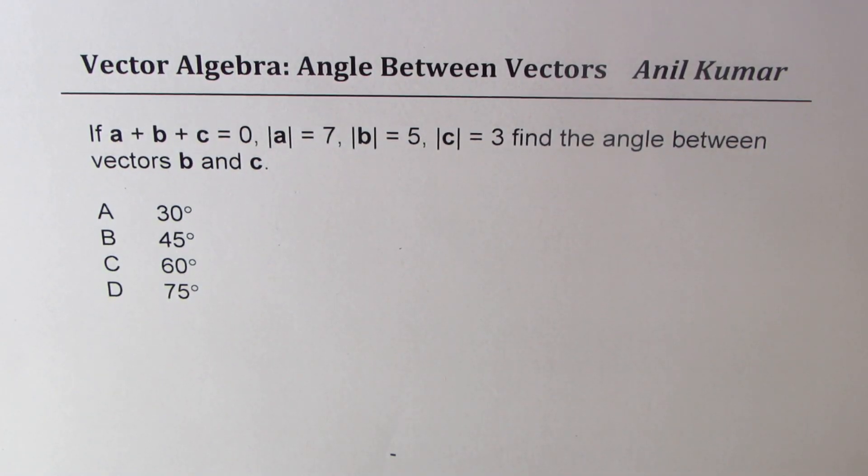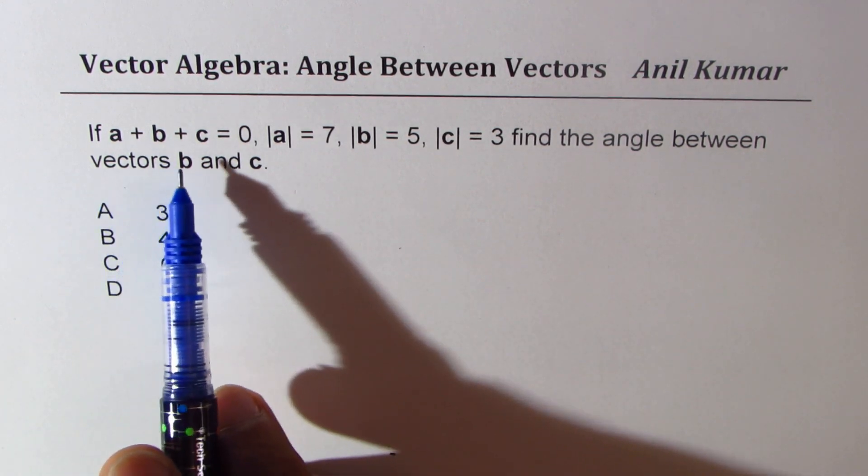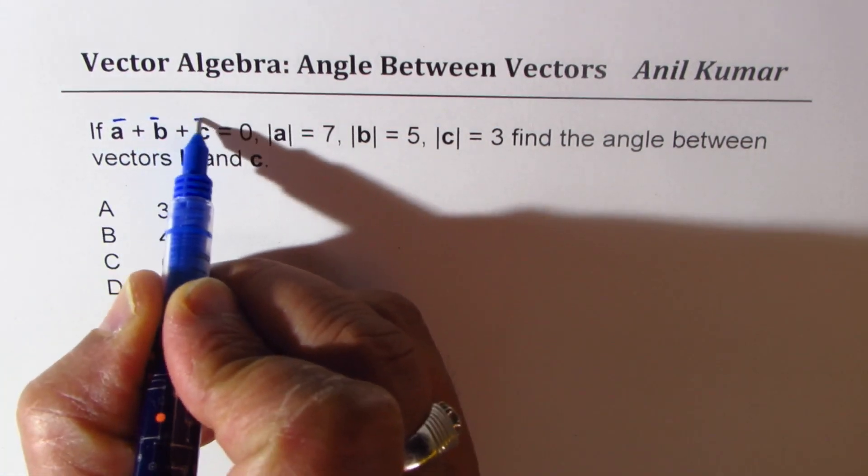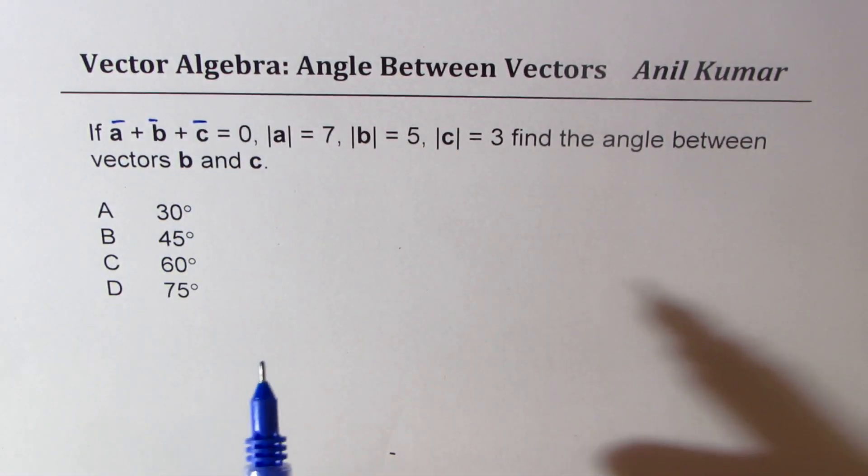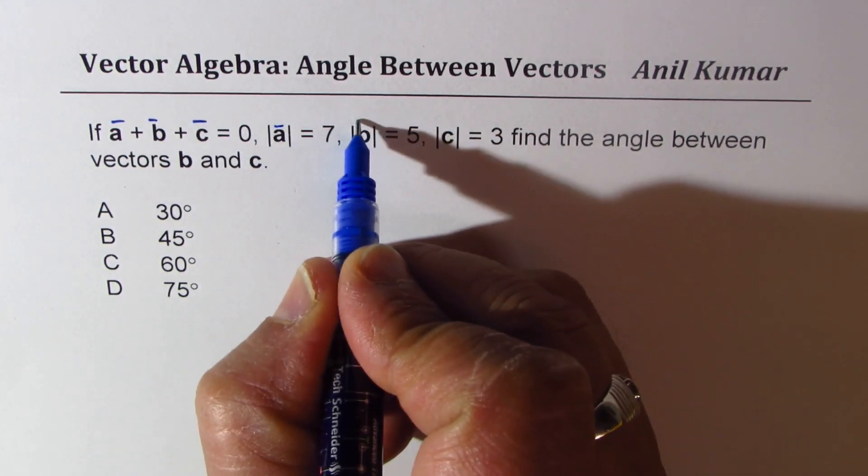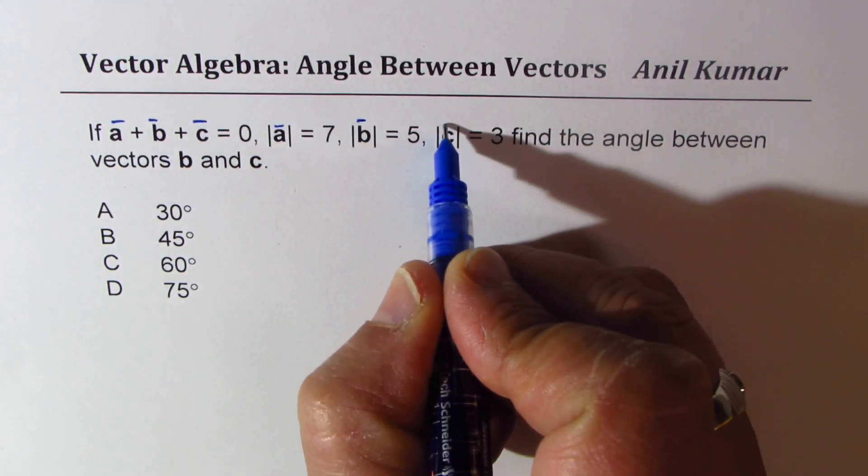I'm Anil Kumar sharing with you a test question on vectors. If a, b, and c are three vectors and their sum is zero, where magnitude of vector a is 7, magnitude of b is 5, magnitude of c is 3, find the angle between vectors b and c.